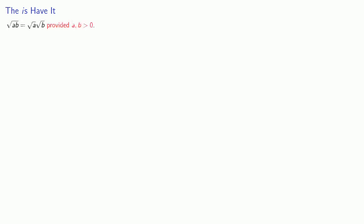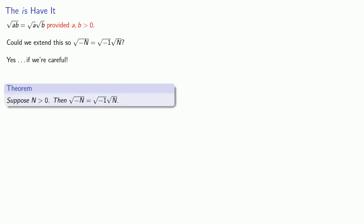But let's see if we can simplify this a little bit. So we might note that square root of a times b is the square root of a times the square root of b, provided that a and b are both positive. Now, could we extend this so that square root of negative n is square root of negative 1 times square root of n? And this would make our lives much easier because then the only pure imaginary we really have to worry about is square root of negative 1. And the quick answer to this question is we can do this if we're careful. And that gives us the following result. Suppose n is greater than 0. Then the square root of minus n is going to be the same thing as square root negative 1 times square root of n.